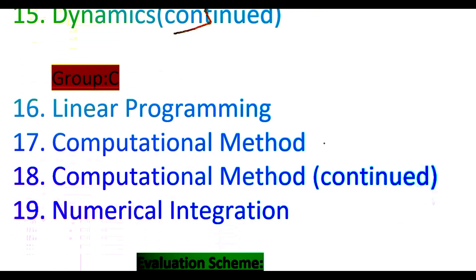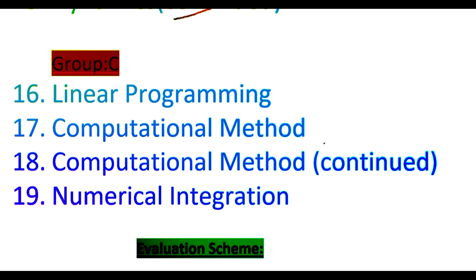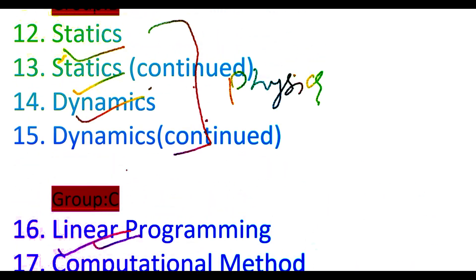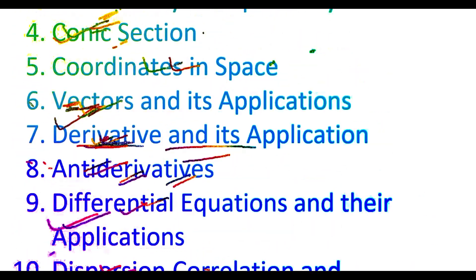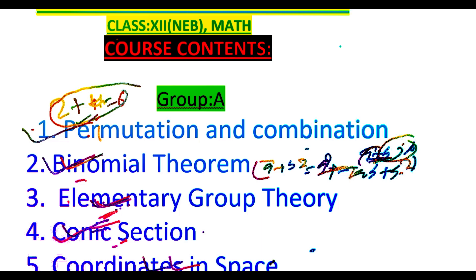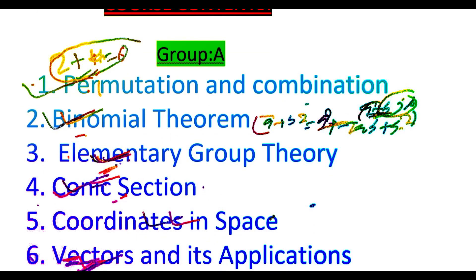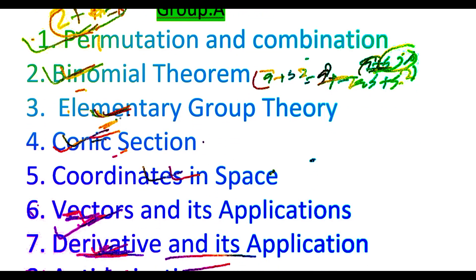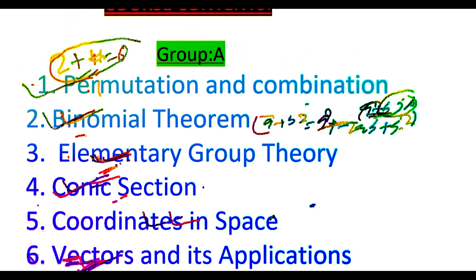Students will be taking either group B or group C, where group A is compulsory. Group C includes linear programming related to optimization, computational methods, and numerical integration. In this way, students will altogether be studying 15 topics in class 12 mathematics. From each topic in the final examination, questions of 2+4=6 or 2+6=8 marks will be asked.